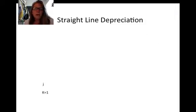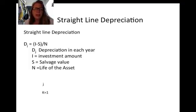We're going to start by looking at one of the simplest methods, which is straight line depreciation. In straight line depreciation, the depreciation in any one period Dⱼ equals the investment amount I minus the salvage value S divided by the number of years N. So it's just straight even depreciation over time.